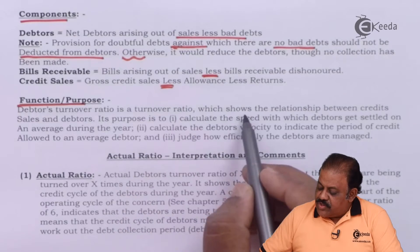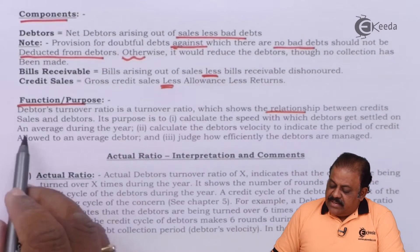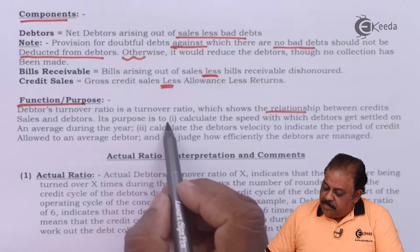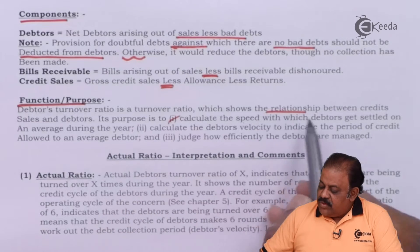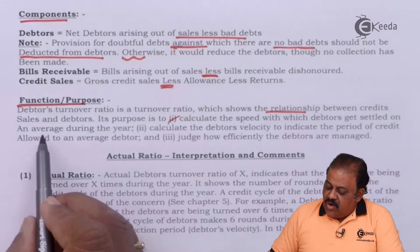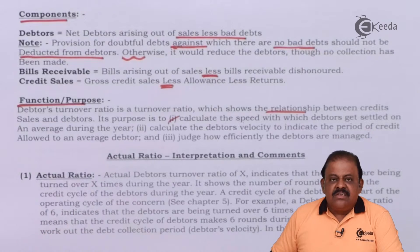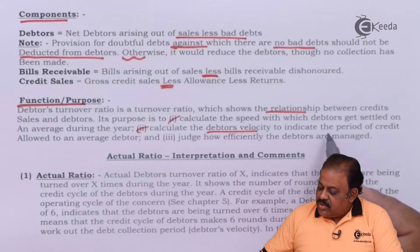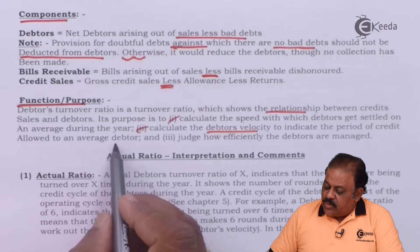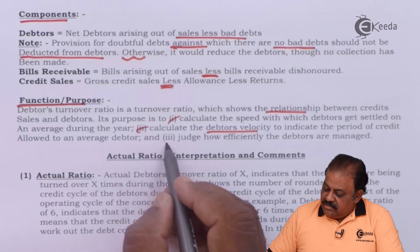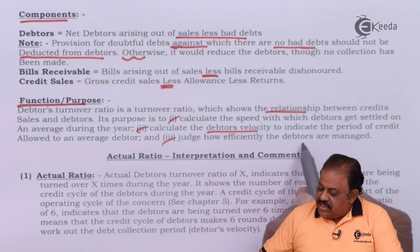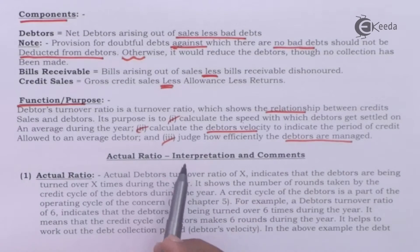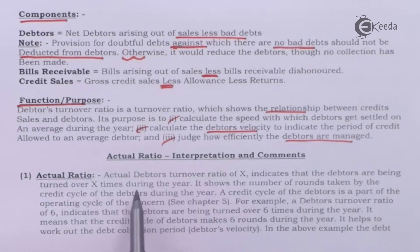Function and purpose: debtors turnover ratio is a turnover ratio which shows the relationship between credit sales and debtors. Its purpose is to calculate the speed with which debtors get settled on an average during the year, to calculate the debtors velocity indicating the period of credit allowed to average debtors, and to judge how efficiently the debtors are managed.